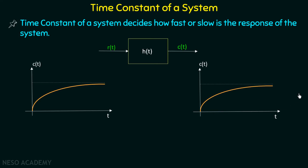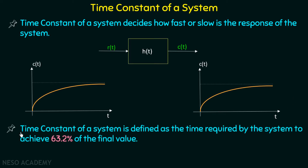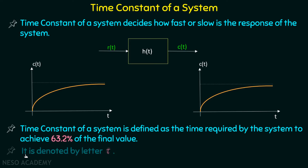Now we know how the time constant of a system decides its speed. Moving on to the definition: the time constant of a system is defined as the time required by the system to achieve 63.2% of the final value. The time constant is denoted by the letter tau.